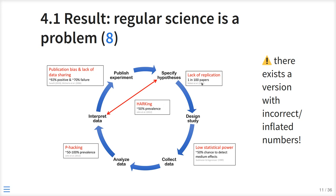Threats to reproducibility include: only one in a hundred papers is reproduced; we use low statistical power; we do p-value hacking, meaning you look for p-values that are significant in multiple ways; we lack data sharing; and we do HARKing — Hypothesizing After Results are Known. This means when you know the results, you start hypothesizing. So if you started your research with hypothesis A and your data comes in, you think of a different hypothesis that fits the story better, and you write it down as if that was where you started. Quite prevalent. All these things make me realize that regular science is a problem.